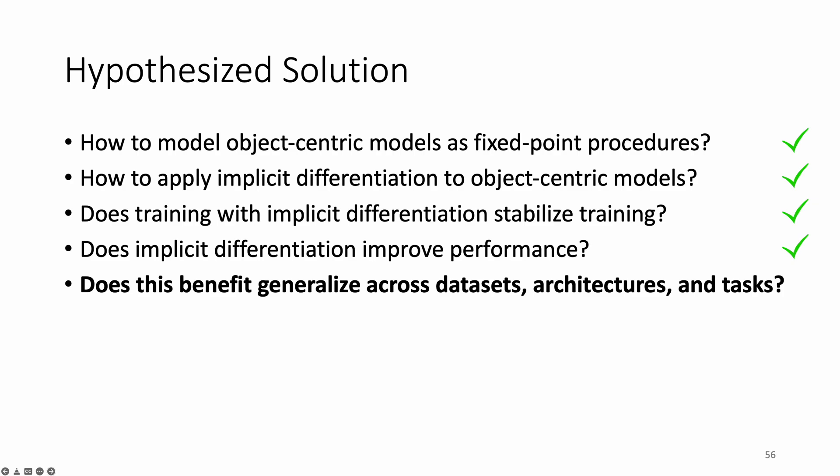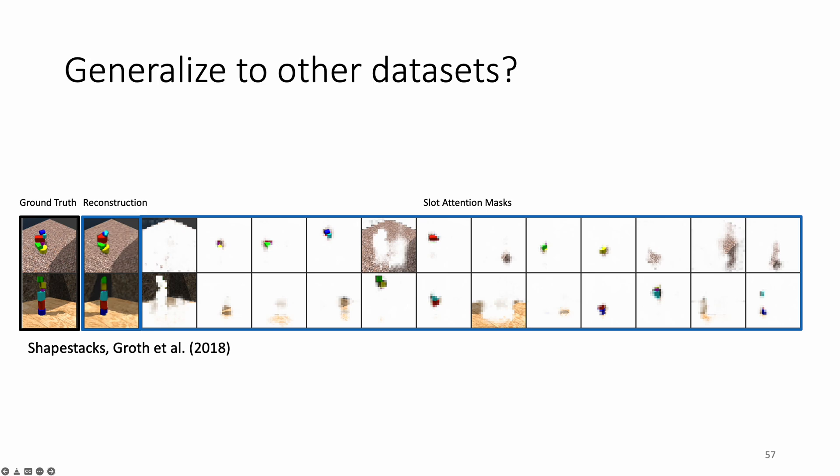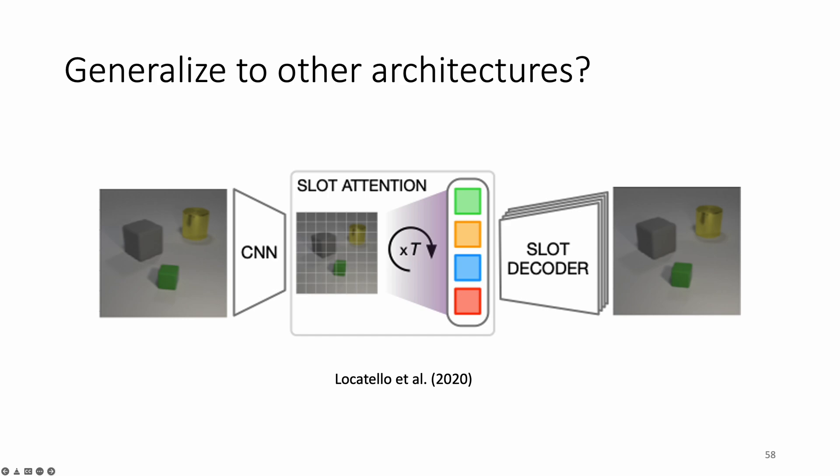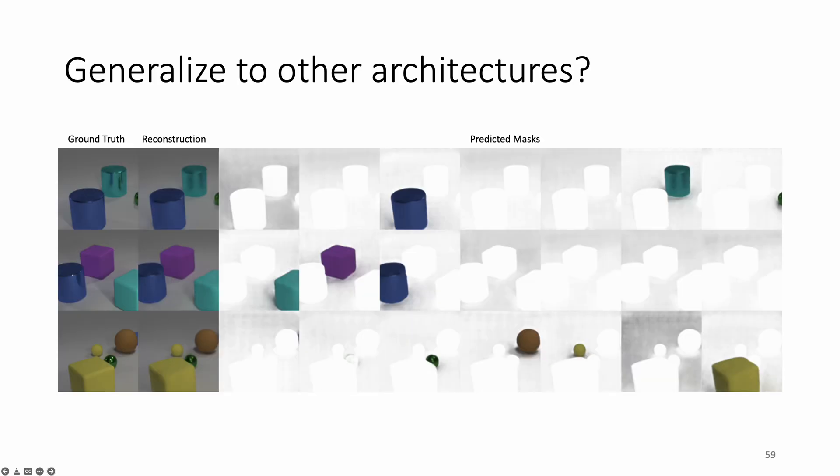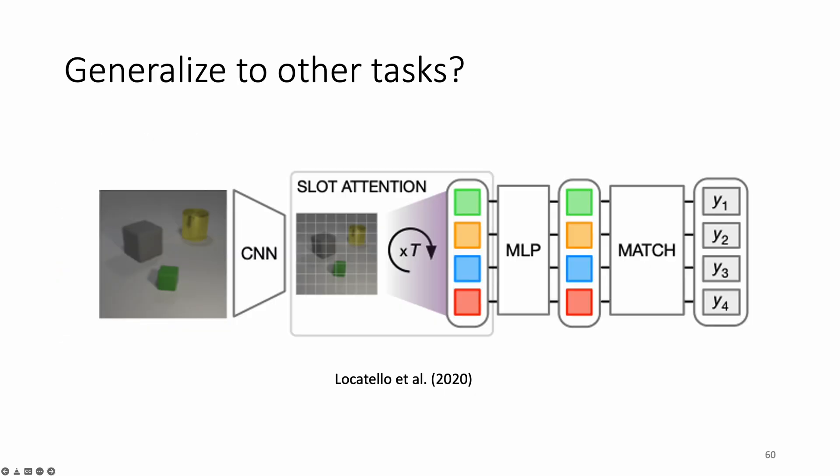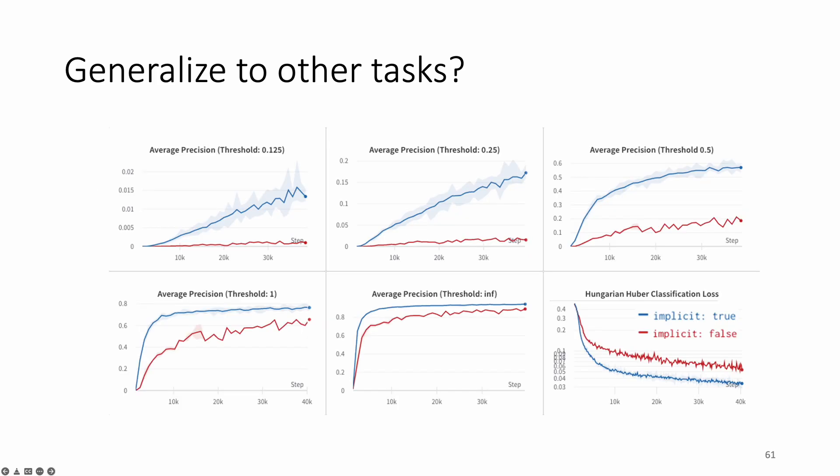Lastly, let's ask whether these results generalize to other datasets, architectures, and tasks. For the Shapes-6 dataset, we see that the implicit version of Slate appears to attend to the salient objects, as its vanilla counterpart does. Instead of the Slate architecture, we also tested whether using implicit differentiation still infers meaningful object representations using the original slot attention encoder and decoder from Locatello et al. 2020. And it does. Lastly, we asked if implicit differentiation helps with property prediction of objects beyond just reconstruction. And the quantitative performance of our implicit version is much better than its non-implicit counterpart.